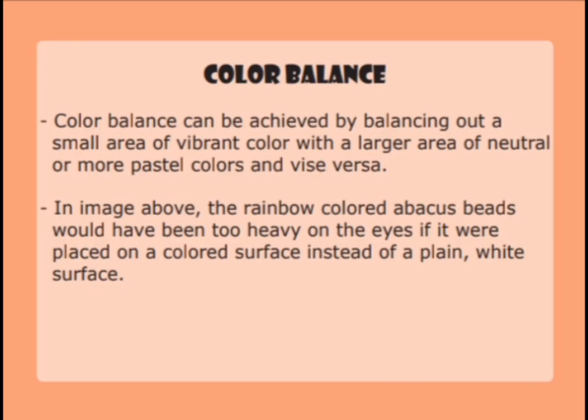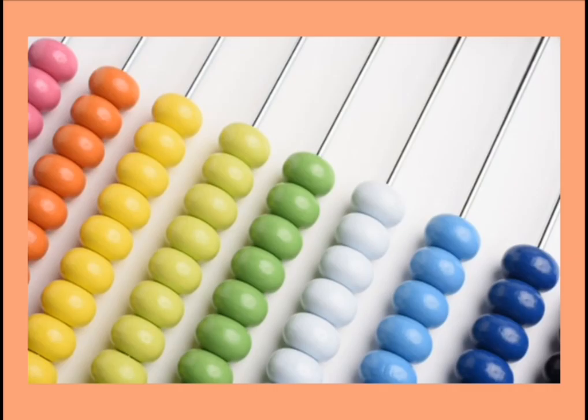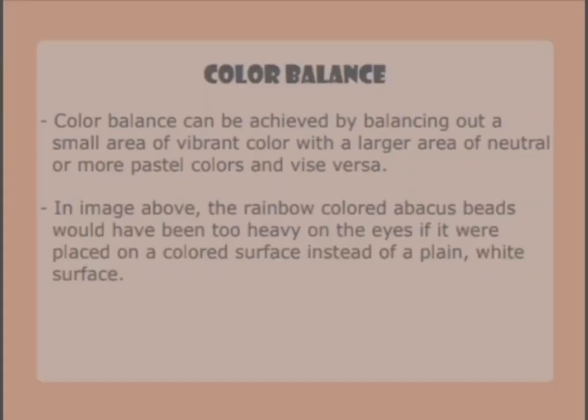Color balance can be achieved by balancing out a small area of vibrant colour with a larger area of neutral or more pastel colours, and vice versa. In the image above, the rainbow-coloured abacus beads would have been too heavy on the eyes if placed on a coloured surface instead of a plain white surface.